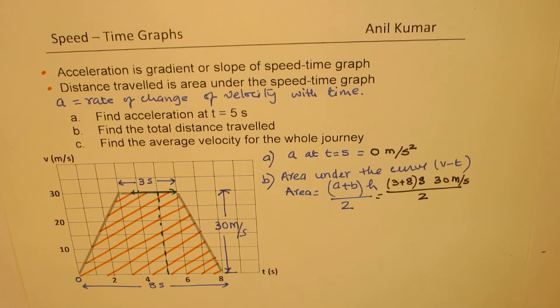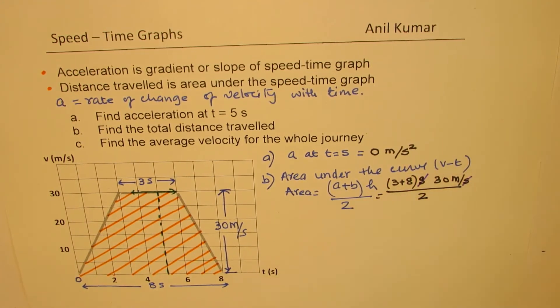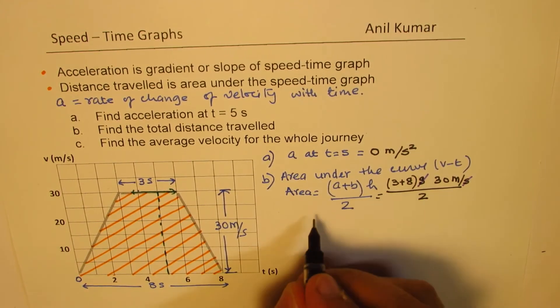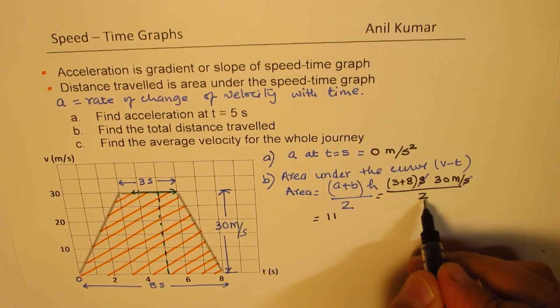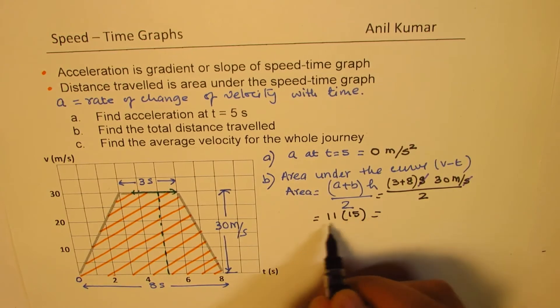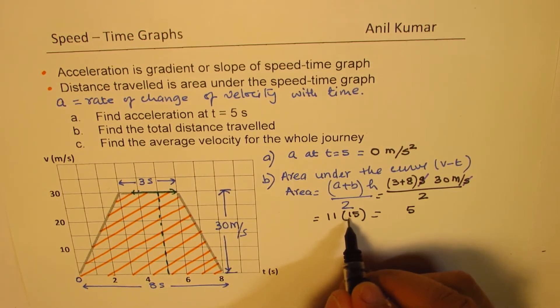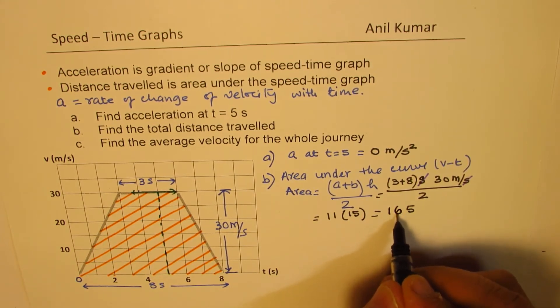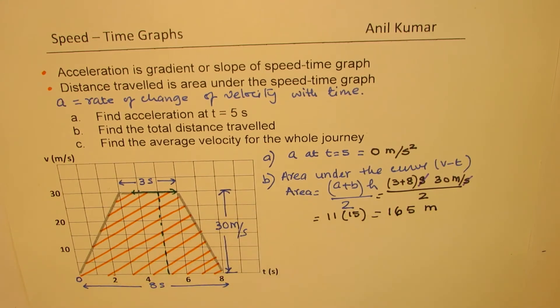So units also, you can see that seconds and seconds cancel. So you get units in meters. So let's calculate this value. So we get 3 plus 8 as 11. And 30 divided by 2 is 15. So 11 times 5 is 55, 11 times 1 is 11. Adding 5, we get 165 units, as you can see, is in meters. So that becomes the distance traveled during these 8 seconds.